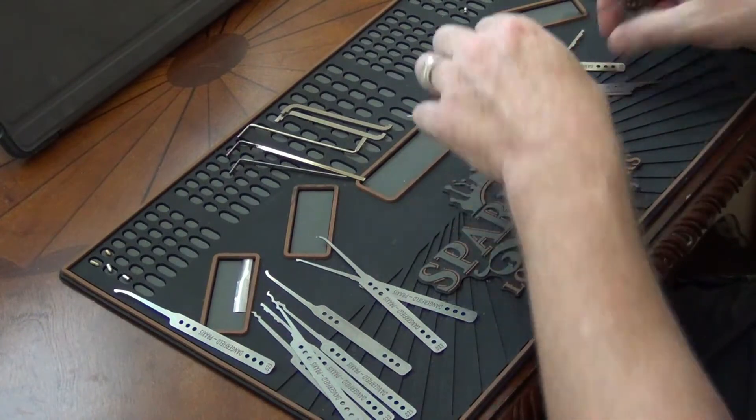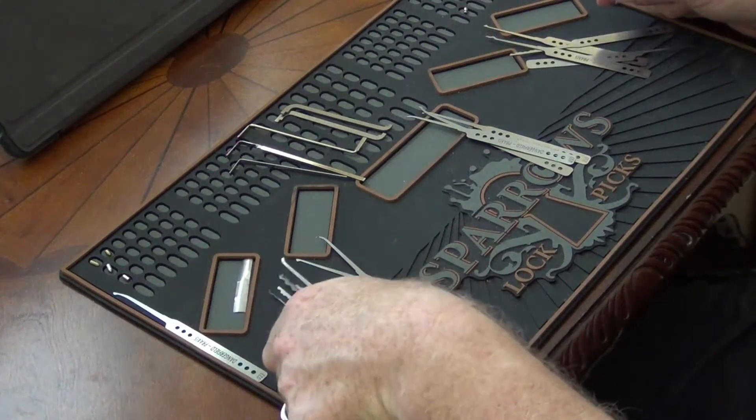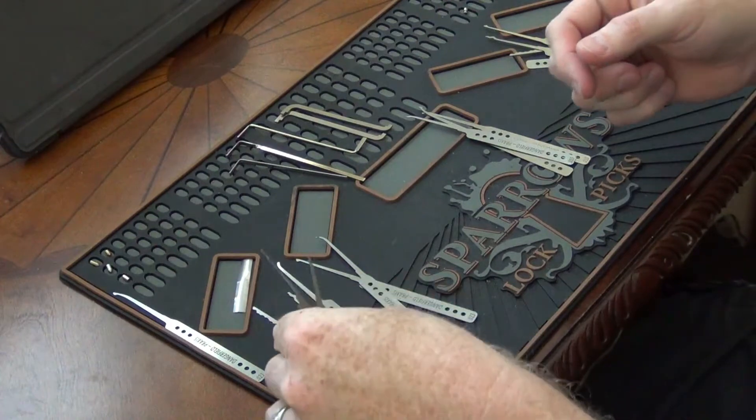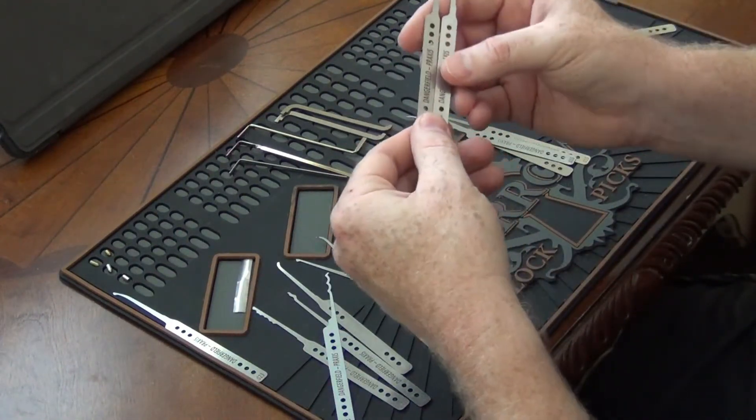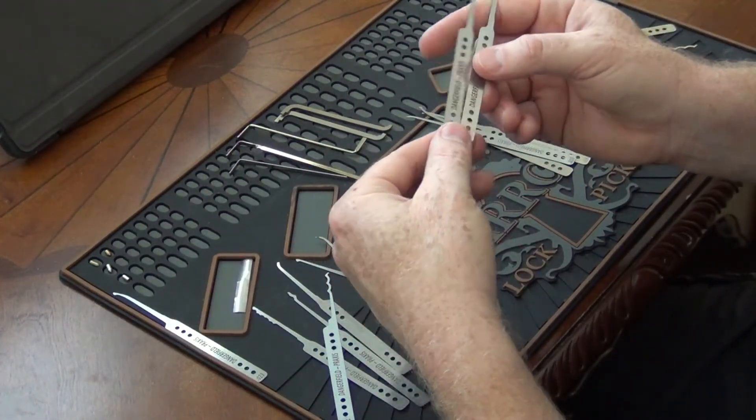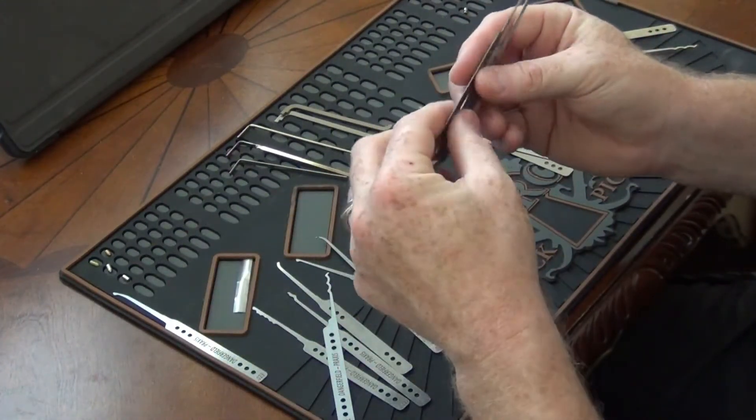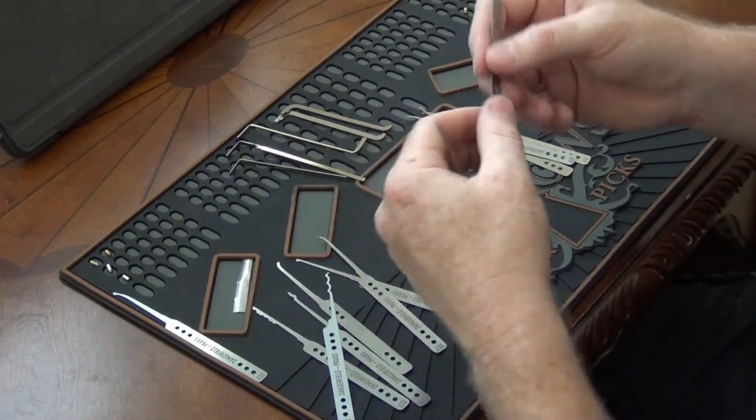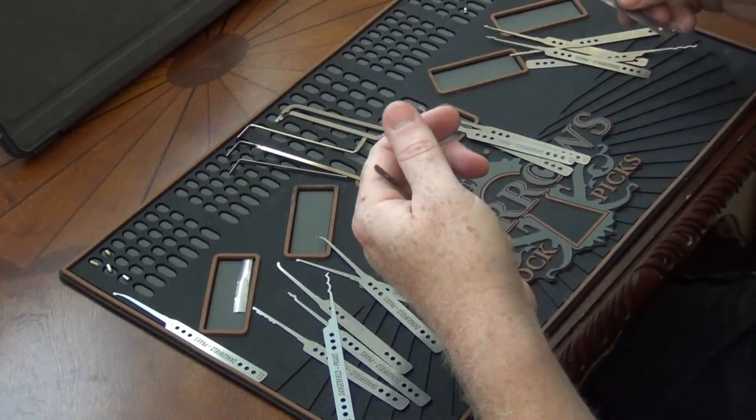I don't know if I'll use any of these rakes, but you can see they come in - these are the 15 thousandths and these are the 23 thousandths. So you get two different thicknesses, which is pretty cool. That's one thing that a lot of these pick sets are missing - the double thicknesses. I haven't decided on if I'm going to put covers on the handles. I kind of like to leave them as is a lot of times when I get these picks.